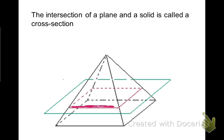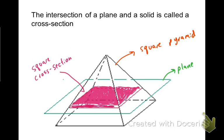This slide defines what a cross-section is. You can see if you take a pyramid and you cut a plane through that pyramid, then you're going to have a cross-section. This is a square pyramid, so the cut of the cross-section is also going to be a square. And here's that square.